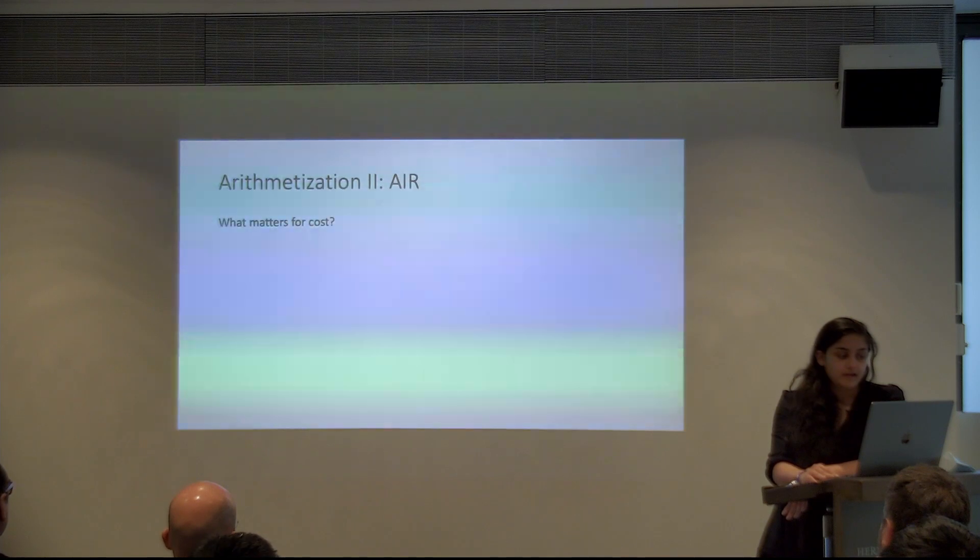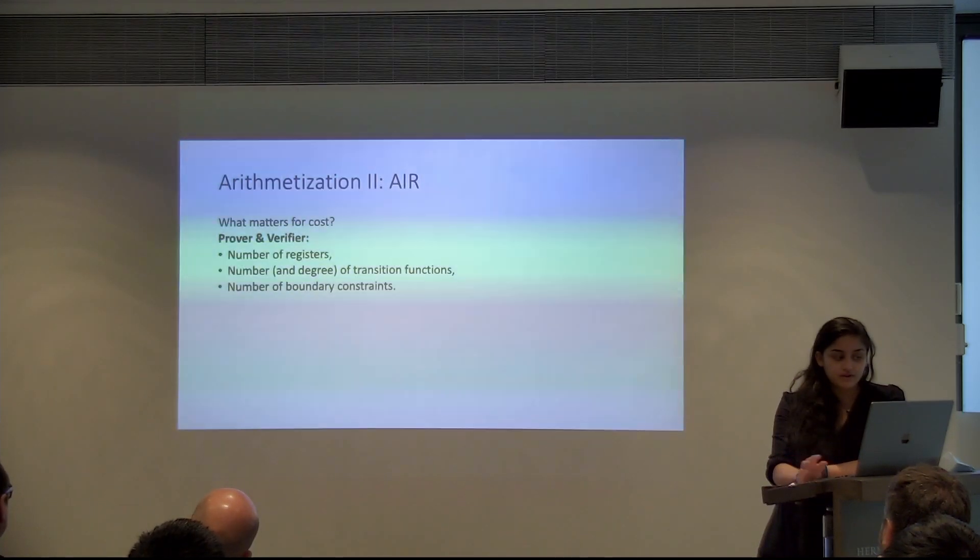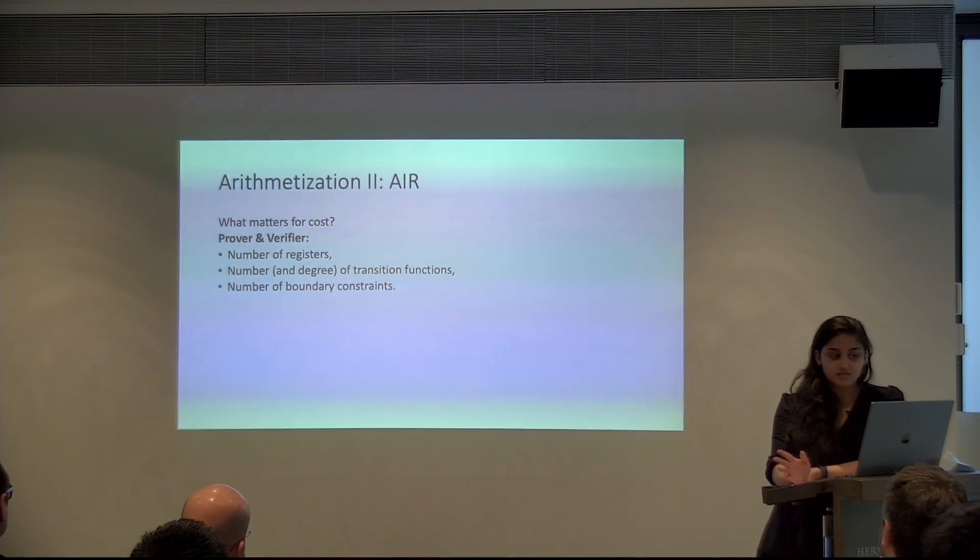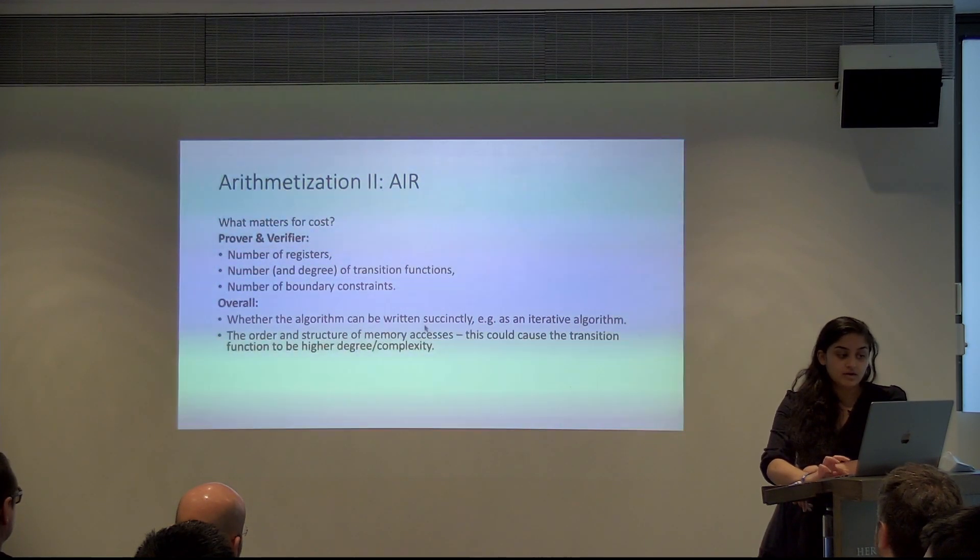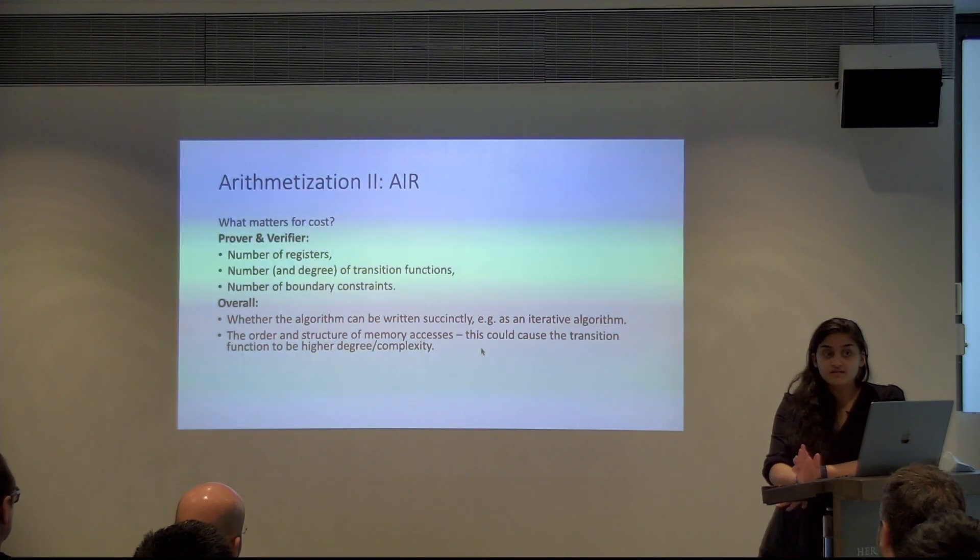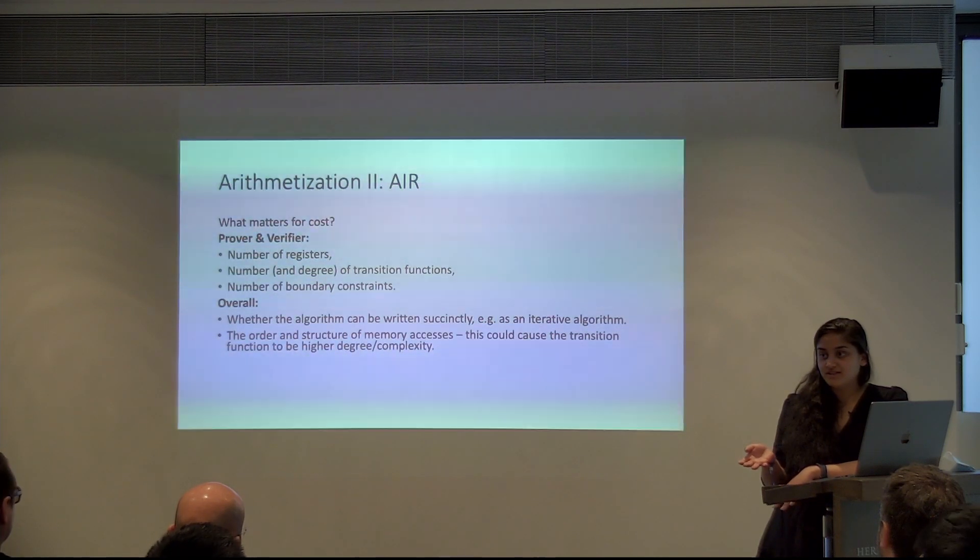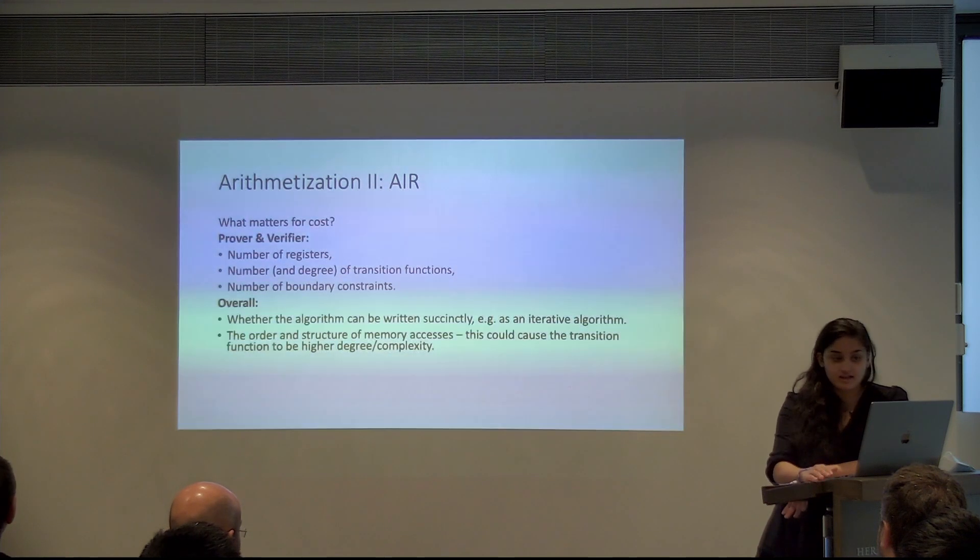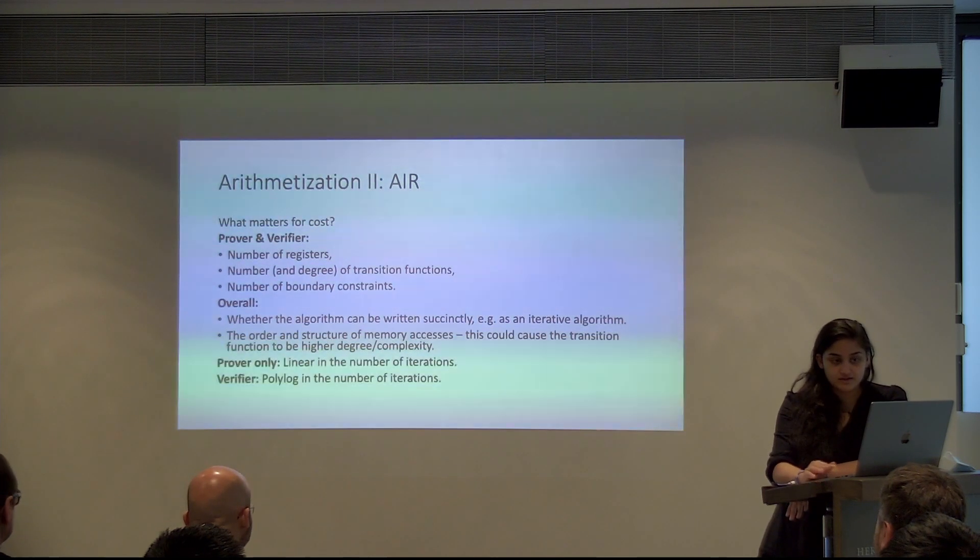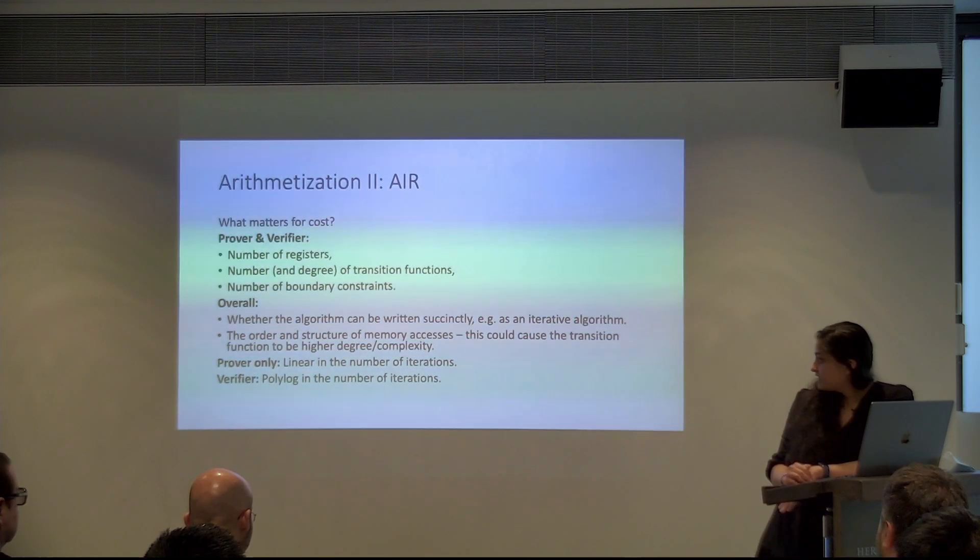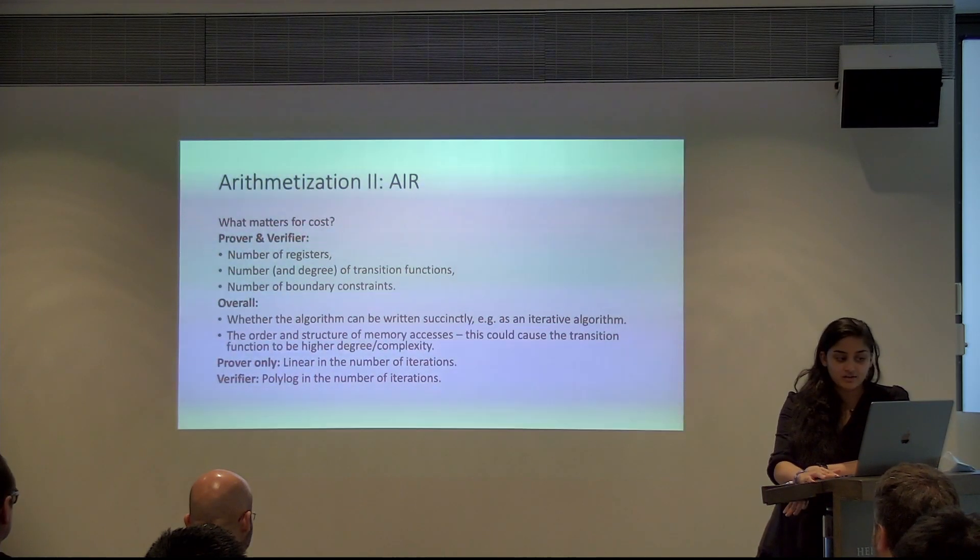So yeah, that's I guess all you need to remember from the slide. Again, TLDR, what matters for cost, for the prover and verifier, both number of registers, number and degree of transition functions, number of boundary functions. This is what both the prover and verifier depend on linearly. And overall, if the algorithm can be written succinctly as an iterative algorithm, that's the most important thing. And the order and structure of memory accesses, if there's a lot of variability in this, you basically, you can no longer write your program succinctly, right? Cause every different type of memory access adds something to the description of an iteration of the program. So number of accesses matters, and different types of accesses also matters. So yeah, again, just summarizing that, linear and number of iterations for the prover, polylog and number of iterations for the verifier.